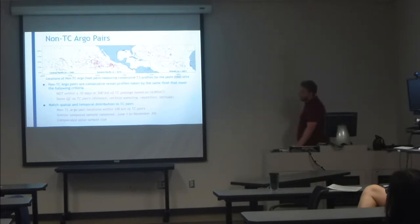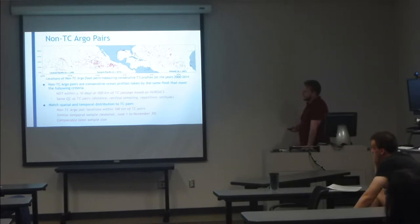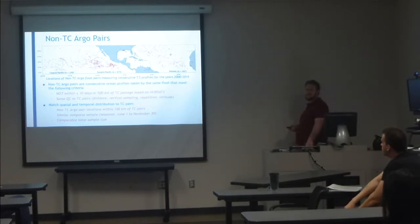Another change I've made is looking at non-TC Argo pairs, just to see how much background variability plays a role and how much variability you can expect in regular sampling using Argo Floats. These pairs are consecutive profiles from the same float that are not within plus or minus 10 days of a TC, or within 500 kilometers from the HerDAT2 best track. I use the same sampling criteria as the TC pairs: a distance criterion of 50 kilometers, and vertical sampling of at least one measurement every 10 meters in the upper 50 meters, which helps with the BLT integration.